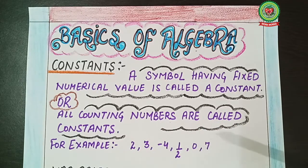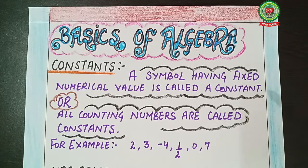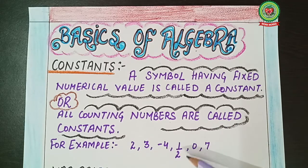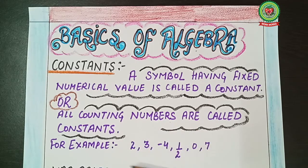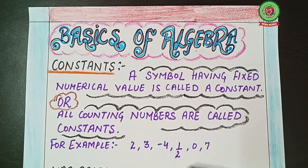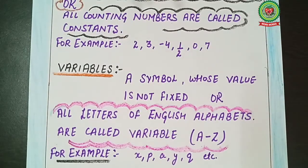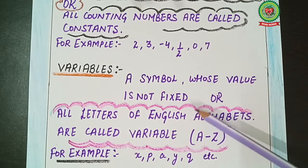The counting numbers are 1, 2, 3, 4, 5, and so on. For example: 2, 3, −4, 1/2, 0, 7 — all these are constants, all these are examples of constants. Now let's move on to variables. A symbol whose value is not fixed is called a variable.